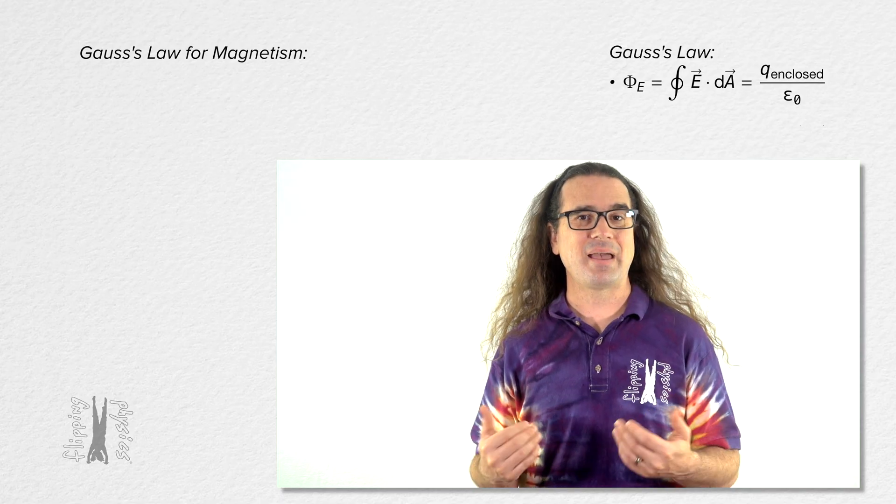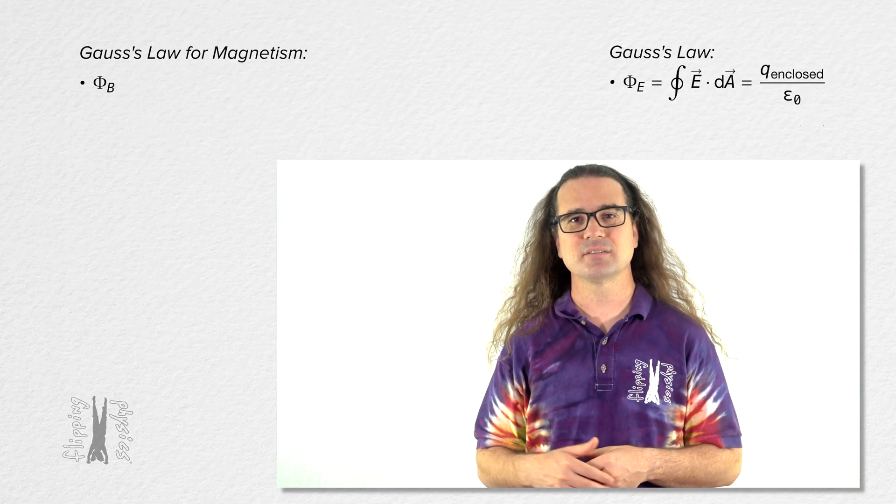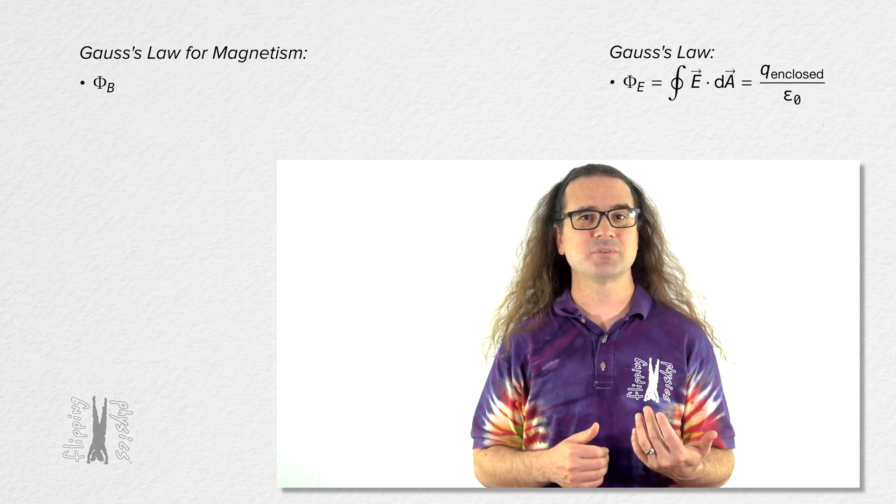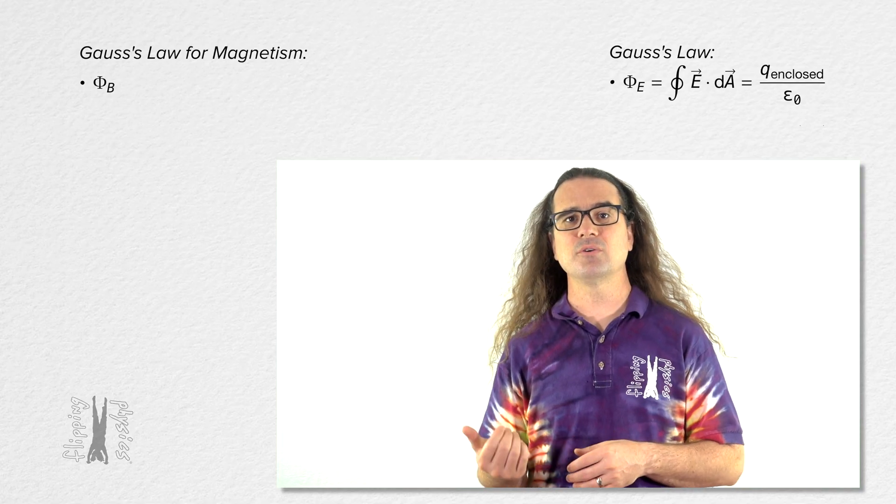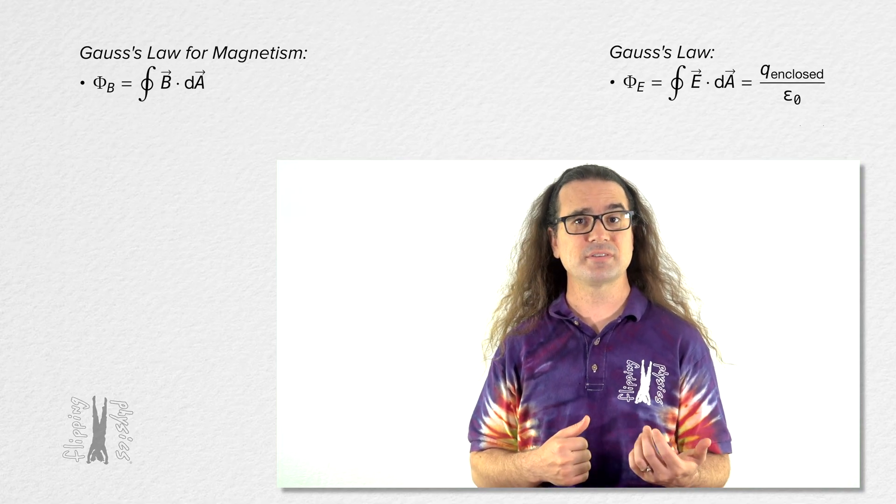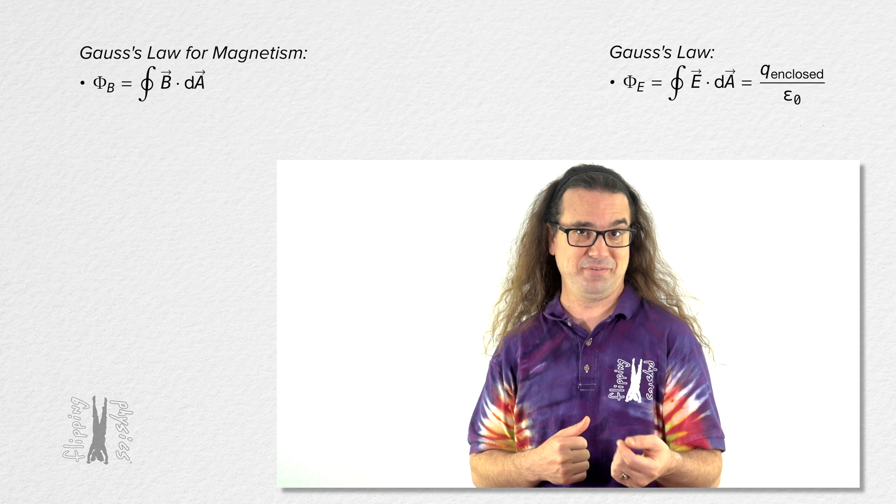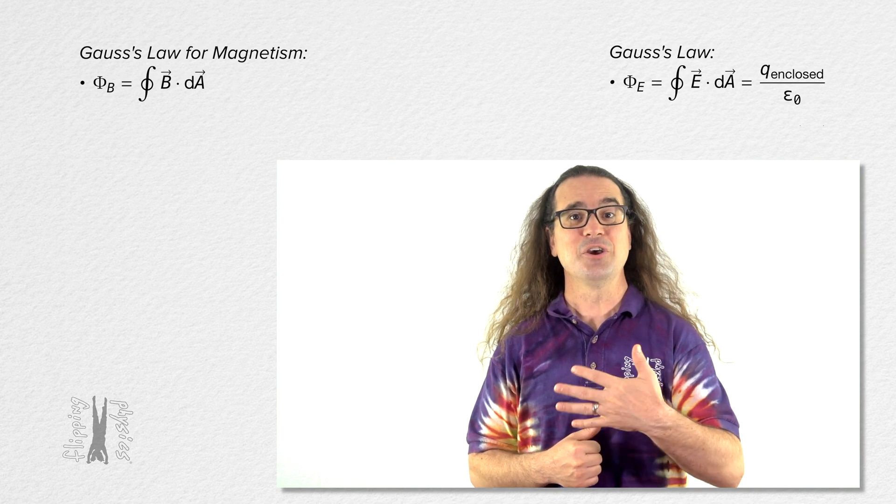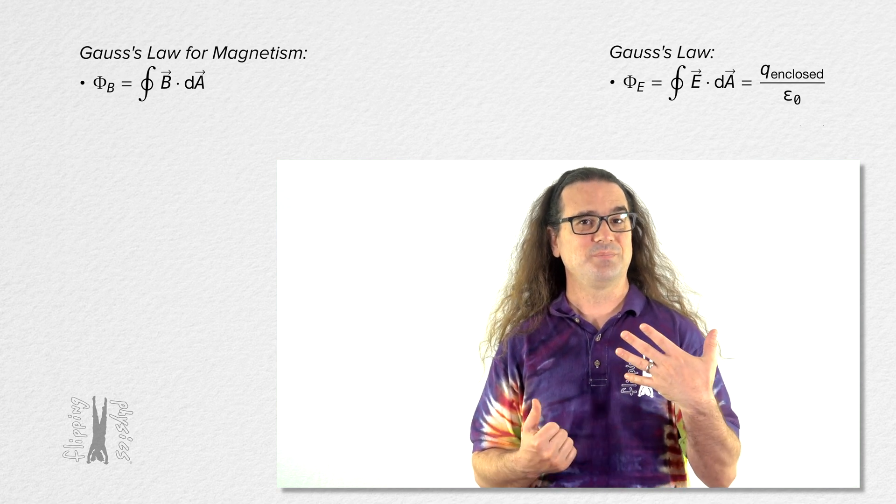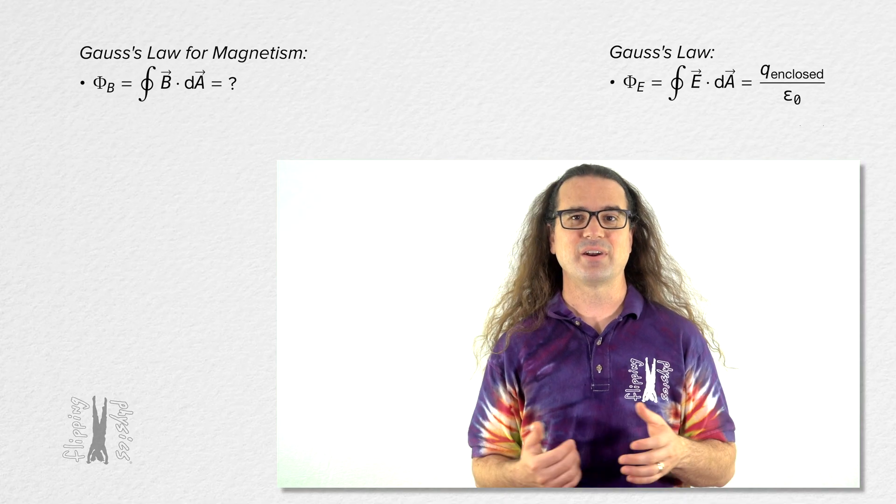Gauss's law for magnetism has to do with magnetic flux. Gauss's law for magnetism states that the magnetic flux through a closed surface equals the closed surface integral of the dot product of magnetic field and area dA, which equals... well, that's what we're going to figure out right now.